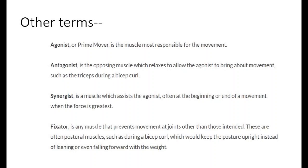A synergist is a muscle which assists the agonist, often at the beginning or the end of the movement when the force is the greatest. A fixator is any muscle that prevents movement at joints other than those intended. For example, postural muscles during a biceps curl keep you upright instead of falling over from the weight, affecting the back muscles rather than the elbow.